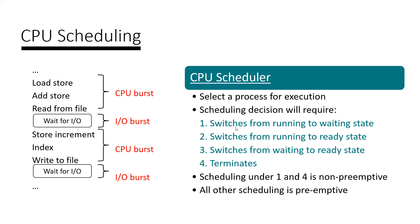For example, consider switching from running to waiting state. When will the scheduler send a process — when will it release the process from running state to ready state? Or from waiting state to ready state? There are some decisions the scheduler makes, and this depends on the scheduling techniques. The first decision rule — switching from running to waiting state, or when the process is terminated — comes under non-preemptive scheduling.